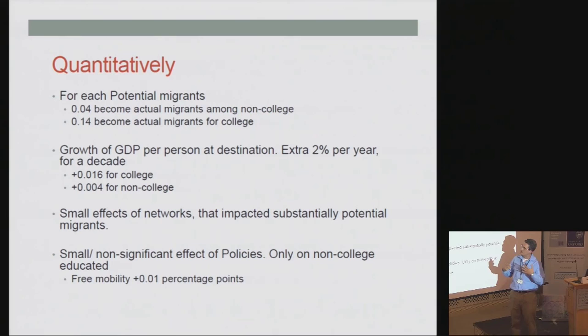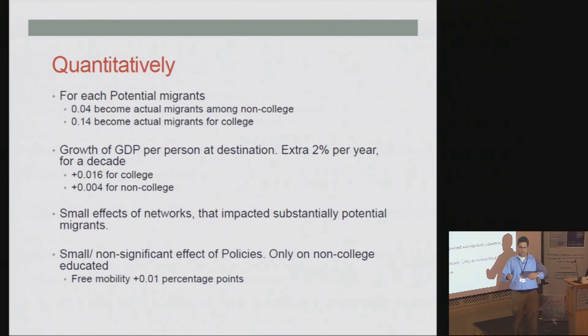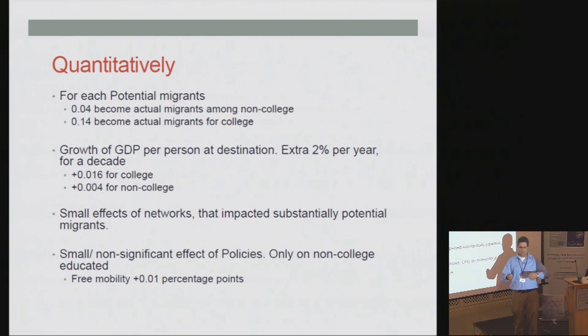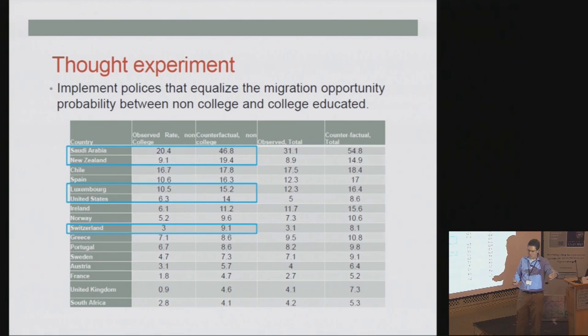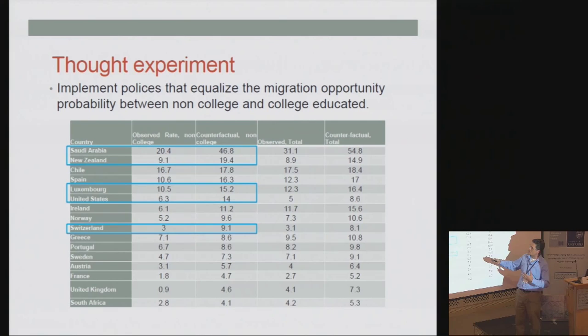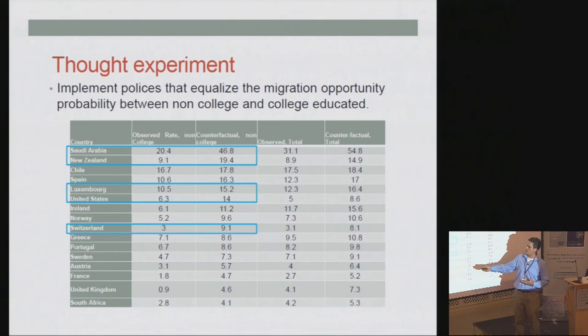As a counterfactual experiment: what if we changed policies so that low-skilled non-college-educated had the same probability of becoming actual migrants as college-educated? Countries like Saudi Arabia would see massive increases — from 20% upwards — and Switzerland, which had a very small inflow of low-skilled immigrants in these ten years, would see a tripling. Many countries would see two- to three-order-of-magnitude increases in less-educated immigration if such a policy could be implemented.